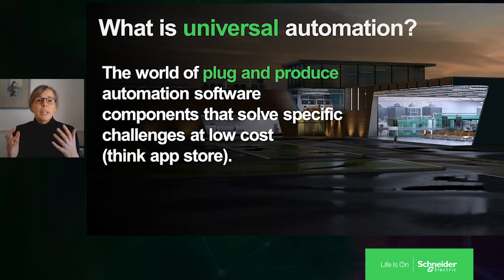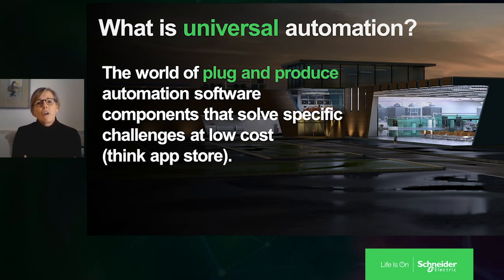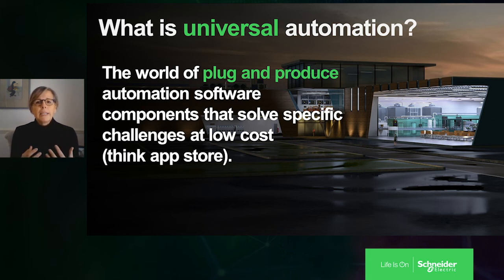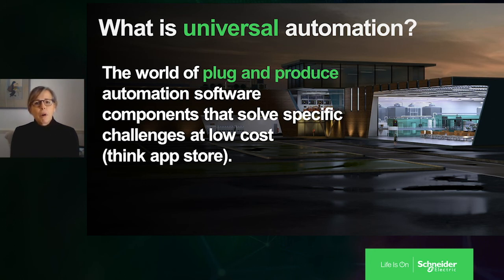So what is it? What is universal automation? Think of it as the dawn of an industrial automation app store. Universal automation is the world of plug and produce automation software components, all based on the IEC 61499 standard, that solves specific customer problems in a proven way.